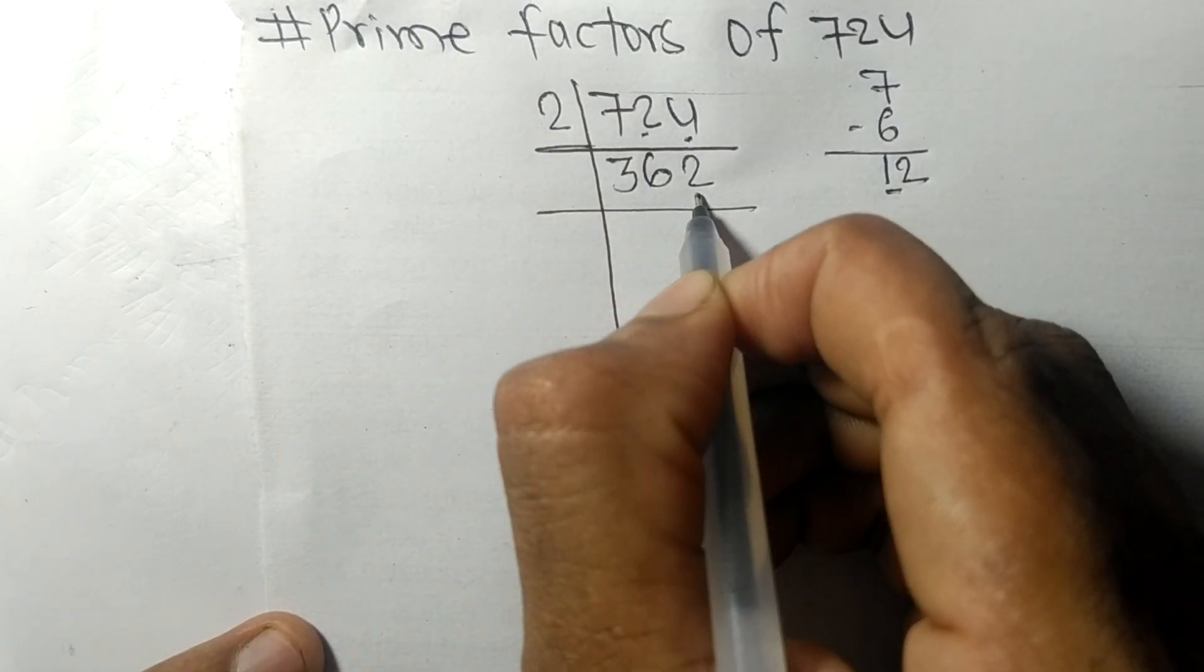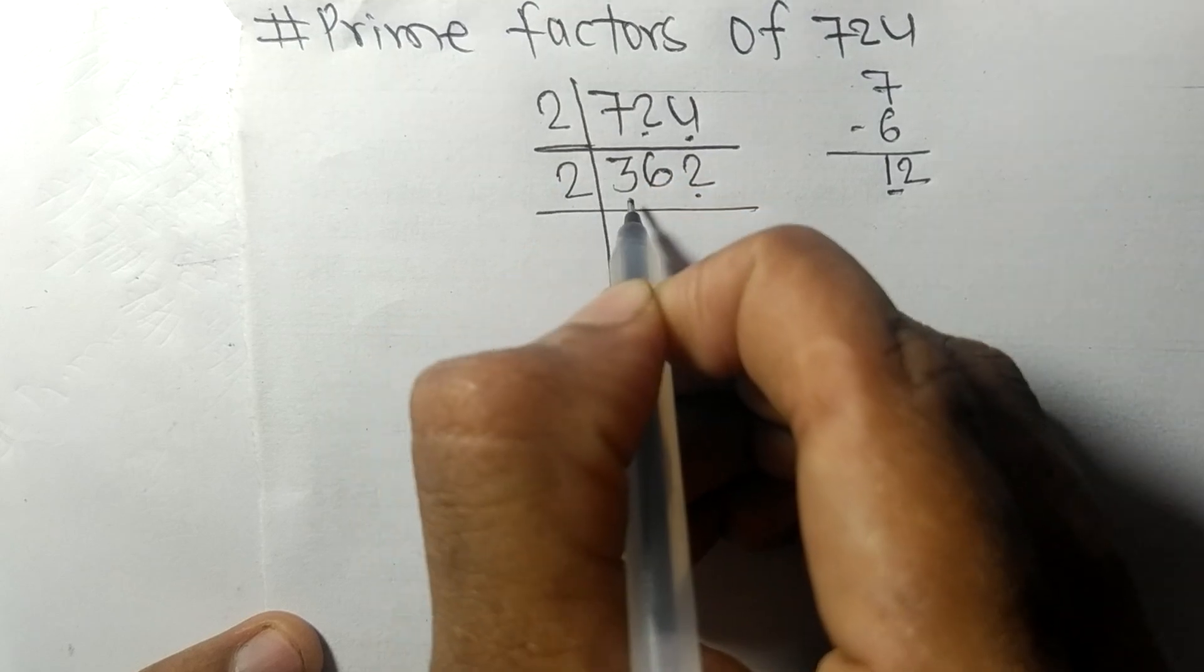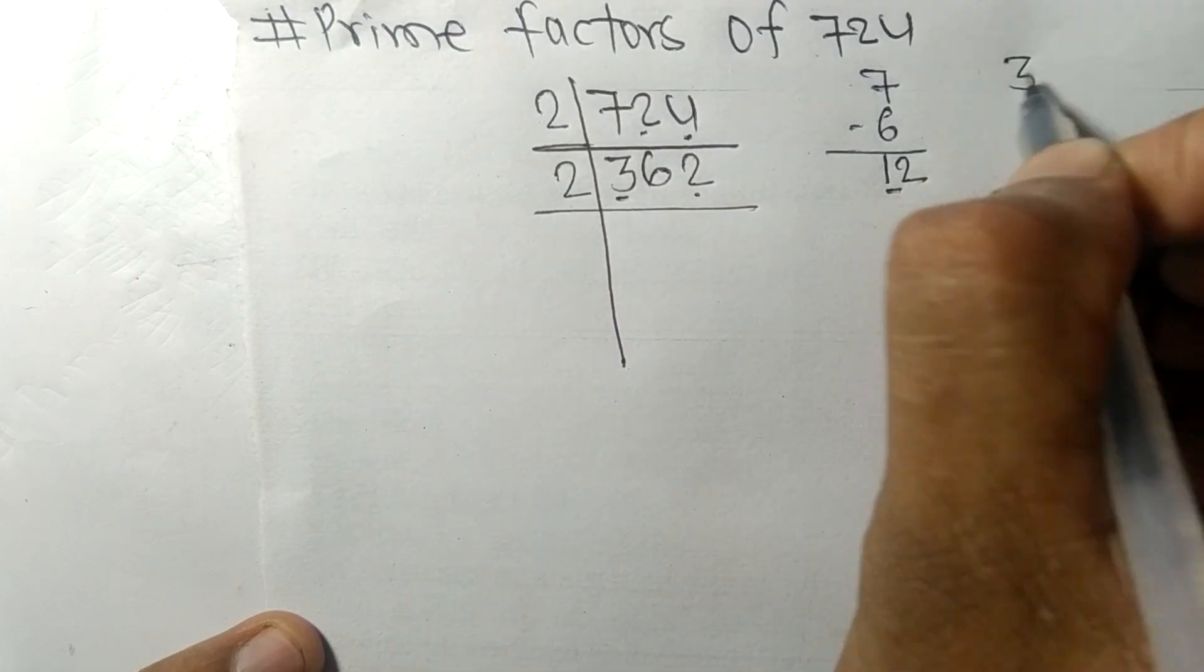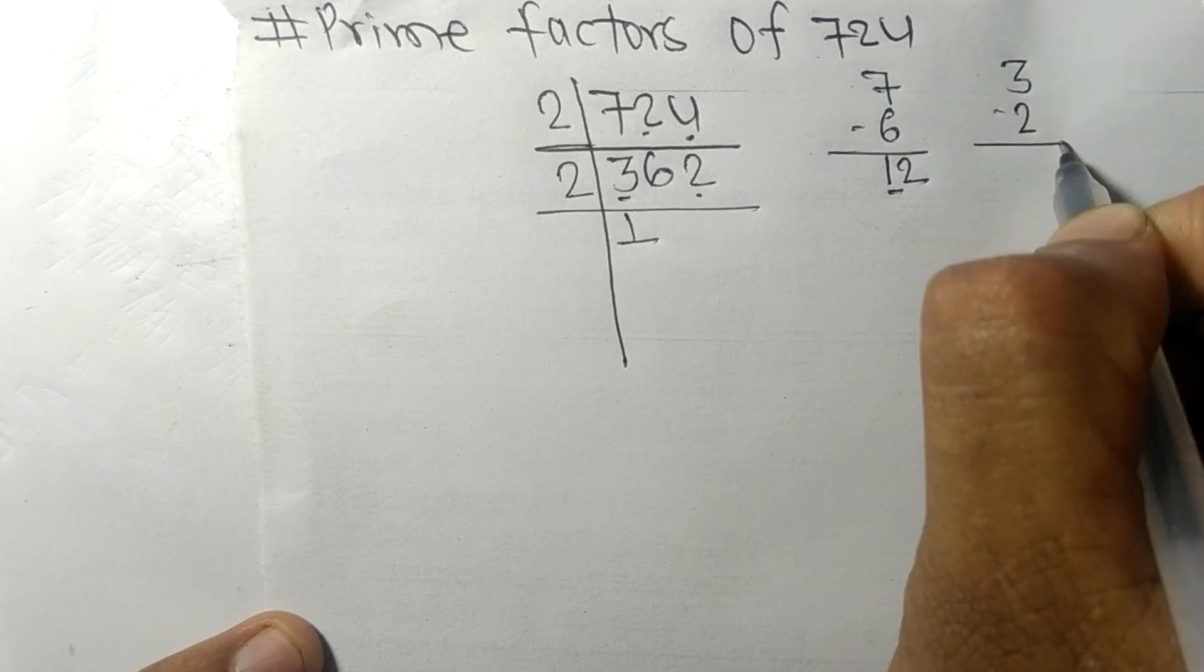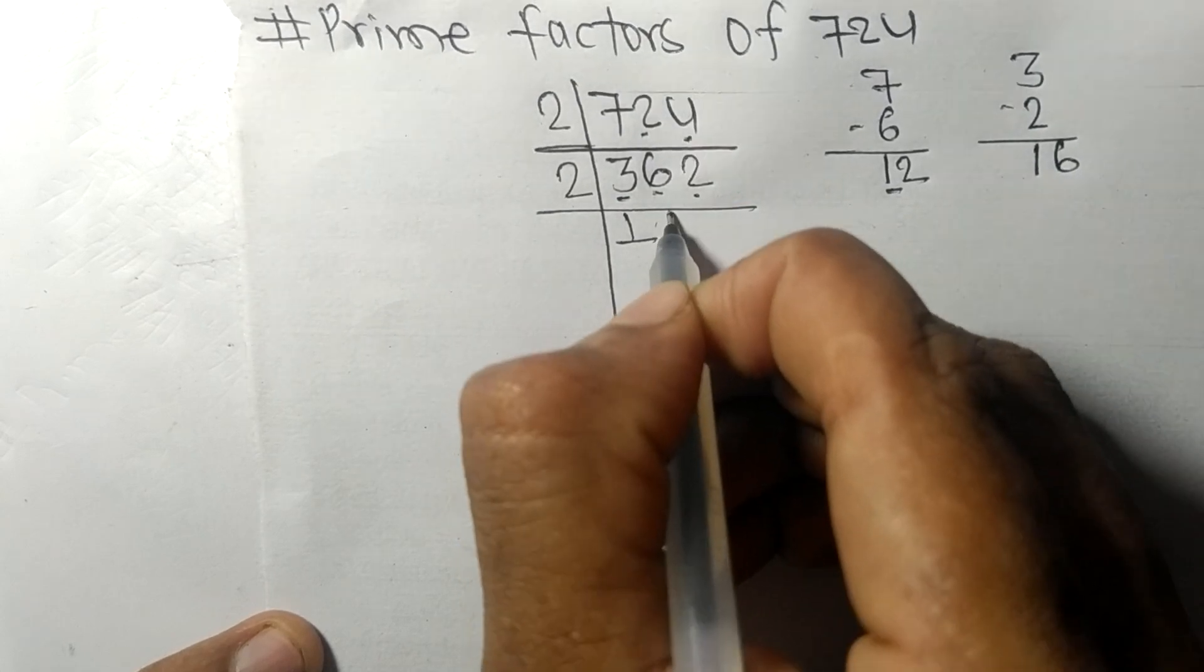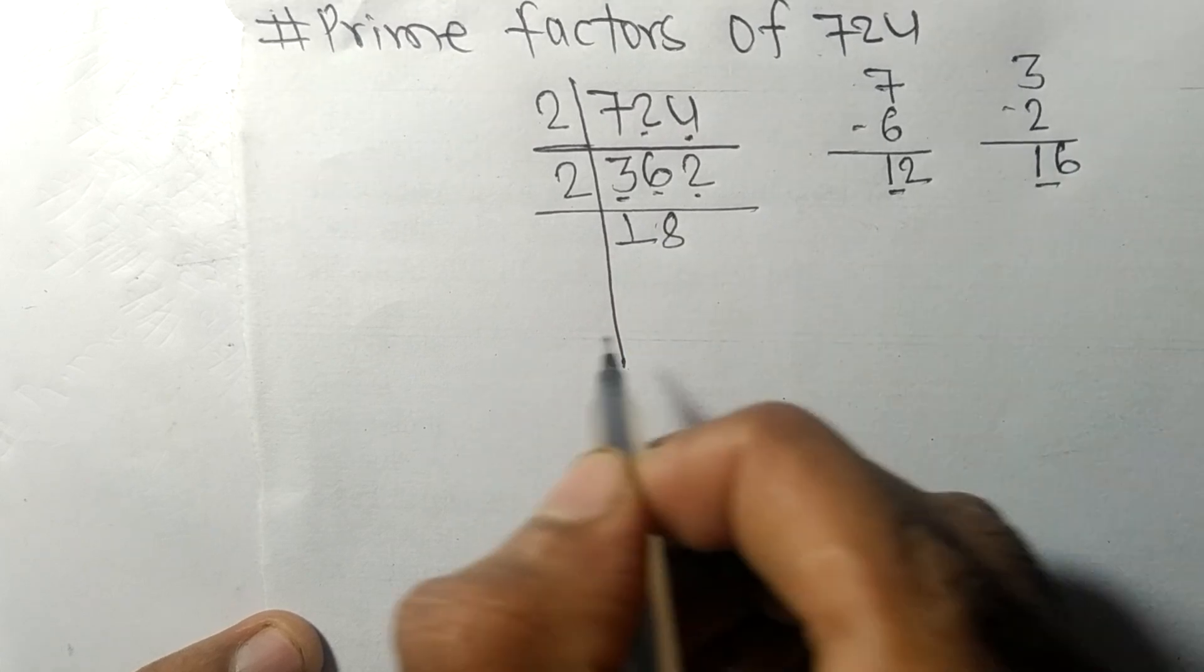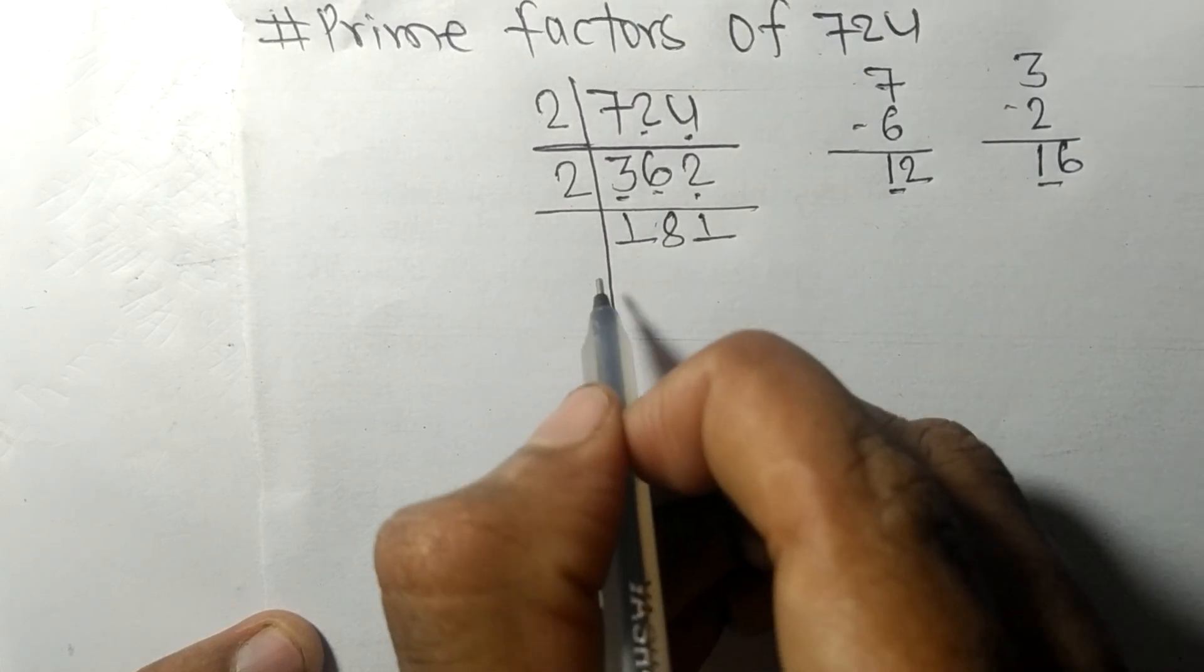So here is 3, 2 times 1 means 2, remainder 1. And this 6, 16, 2 times 8 means 16, and 2 times 1 means 2.